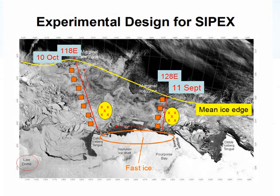This is a map of what we were trying to do. This is a satellite image showing the typical ice extent at this time of year, around about October, in the area south of Australia — south of Western Australia, actually at about 120 degrees longitude.